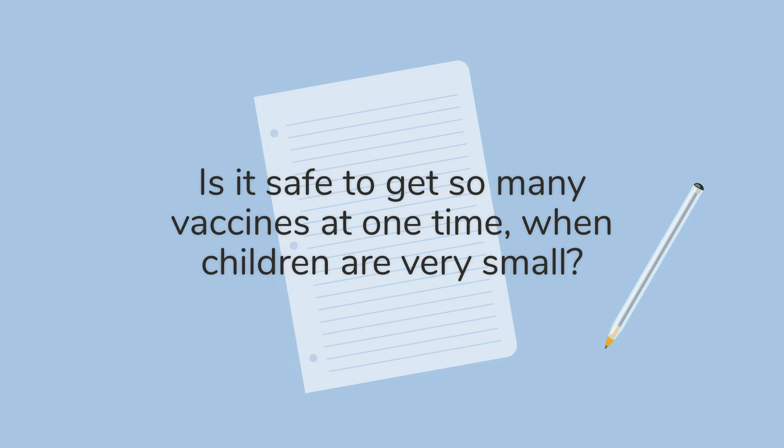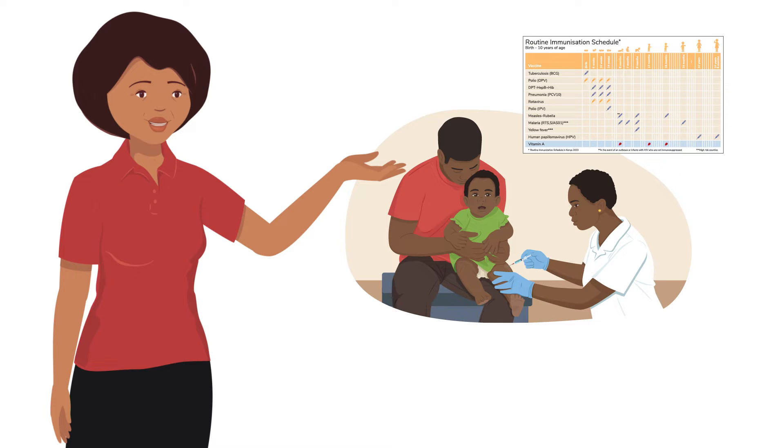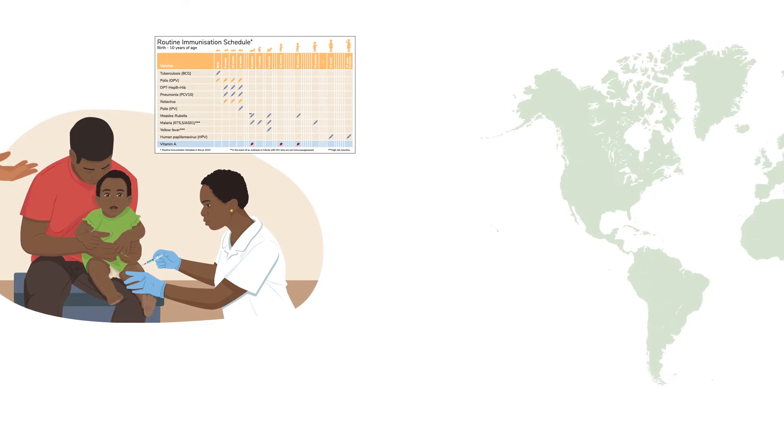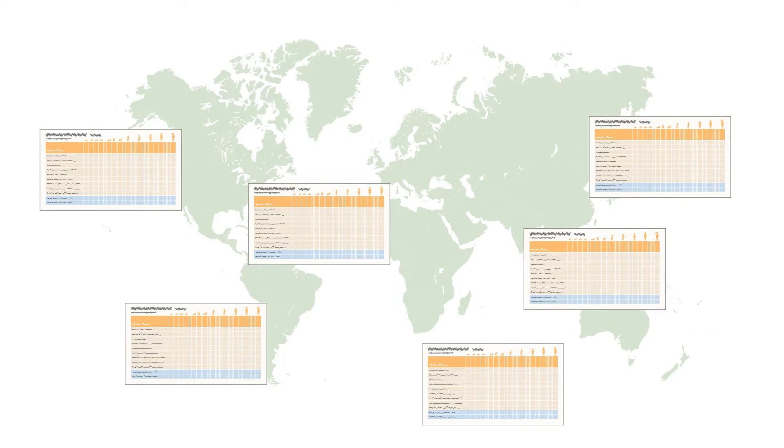Is it safe to get so many vaccines at one time when children are very small? Yes, for decades the immunization schedule has been studied and proven to be safe for children's small bodies. Also, a similar schedule is recommended for children everywhere in the world to make sure they are protected from the most severe illnesses.